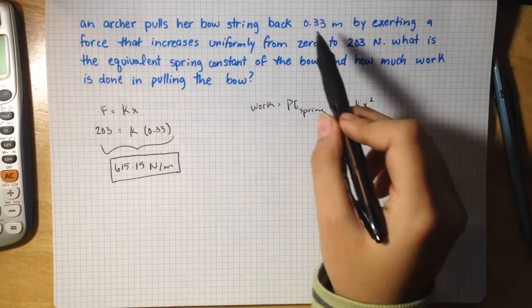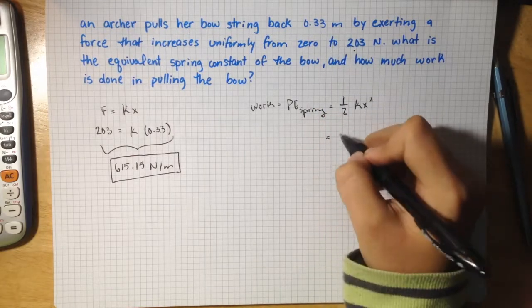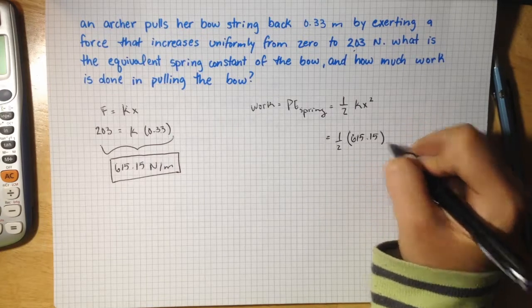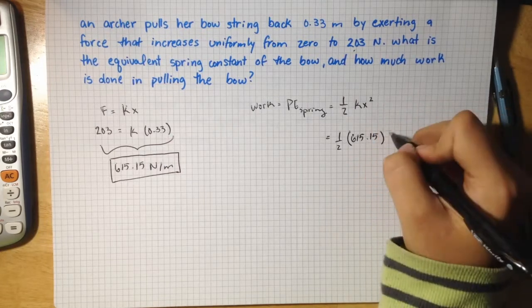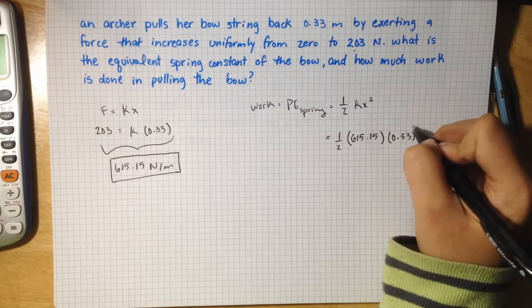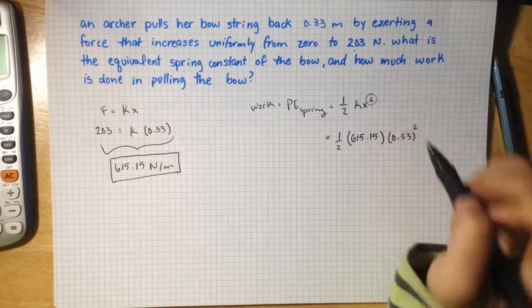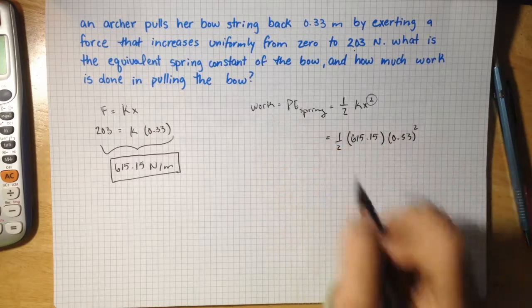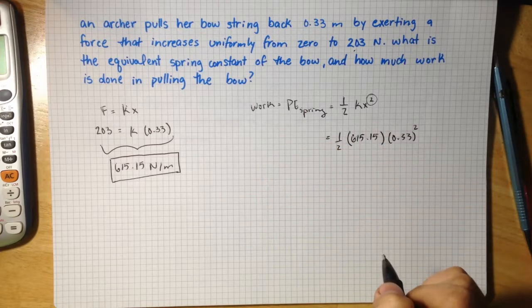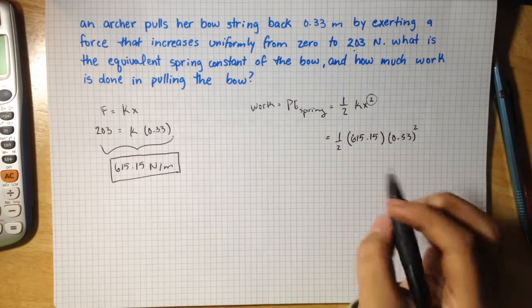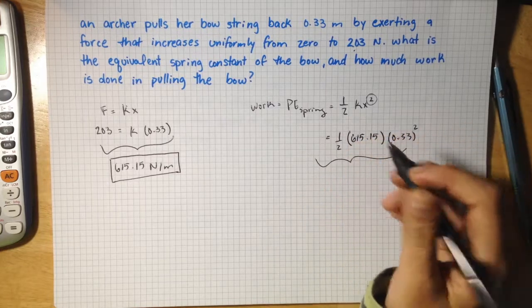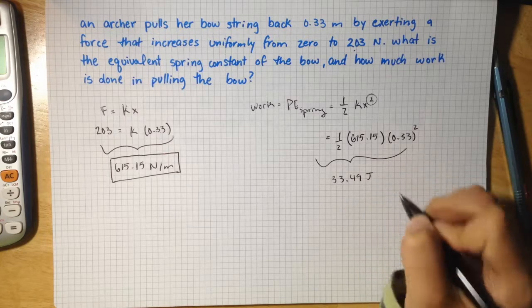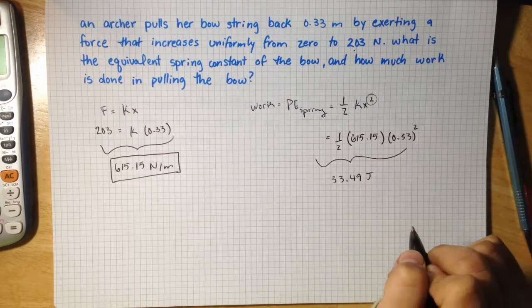So I'm going to plug this and this in. One-half times the spring constant which is 615.15 times the distance which is 0.33, don't forget this squared. Plug this whole thing into the calculator to get the potential energy of the spring or the total work done, and we get 33.49 joules since this is work and potential energy.